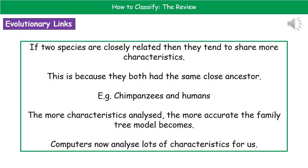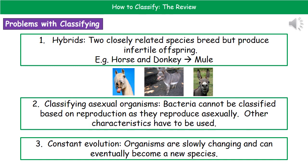If two species are closely related, they tend to share more characteristics because they had a common ancestor quite recently in their past. A good example is chimpanzees and humans, who share a common ancestor. We analyze different characteristics to work out how closely related species are and to build family trees. The more characteristics we analyze, the more accurate the family tree becomes. Computers can now analyze lots of these characteristics for us.